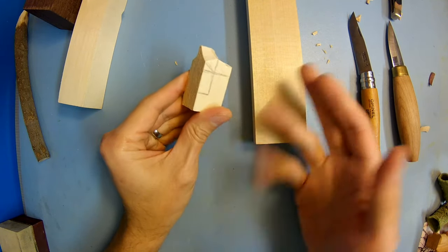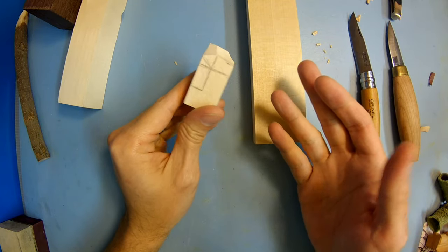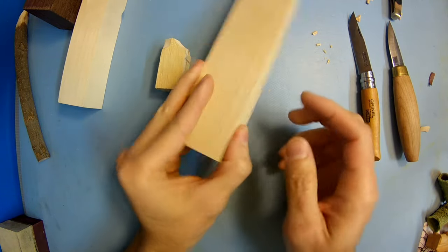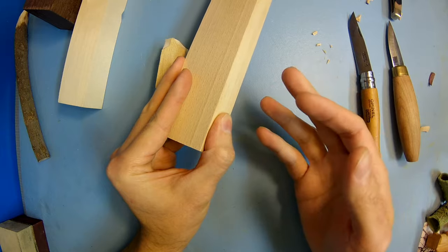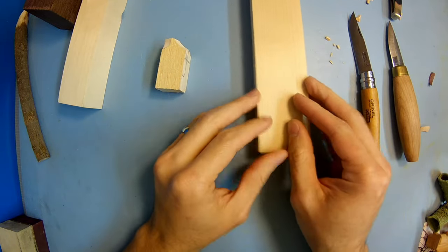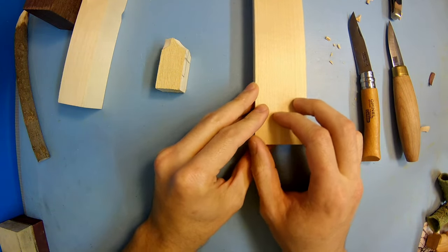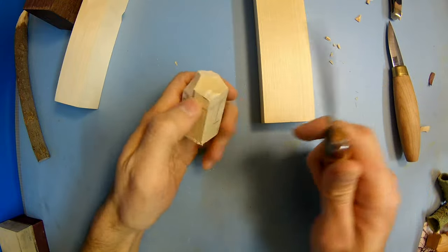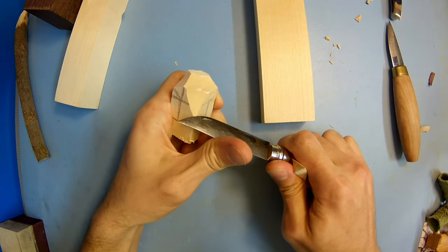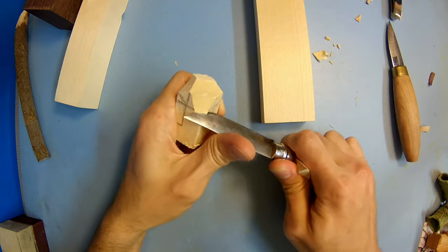This one might have like a seven to ten percent moisture content compared to the kiln dried which may get down to like even three percent. So the kiln dried is usually a little bit harder to carve than the air-dried, and the air dried is just like carving butter - it's so easy to carve, especially when you have a nice sharp knife.